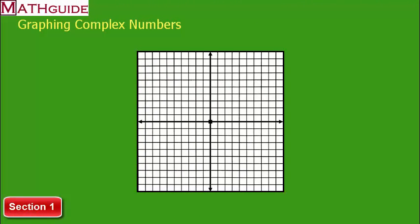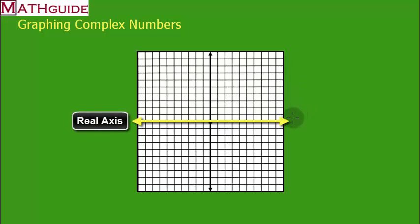Alright, so in this section we're going to talk about what the complex plane looks like when we have to graph complex numbers. You'll see that we have a horizontal axis. The horizontal axis will be our real numbers, which I'm going to mark with a capital R. So we'll put real numbers on our horizontal.